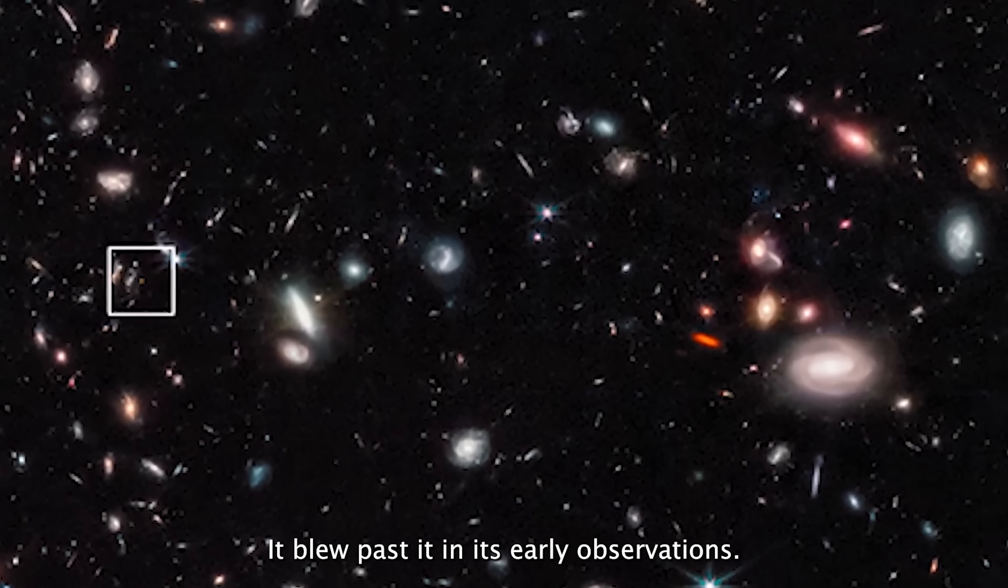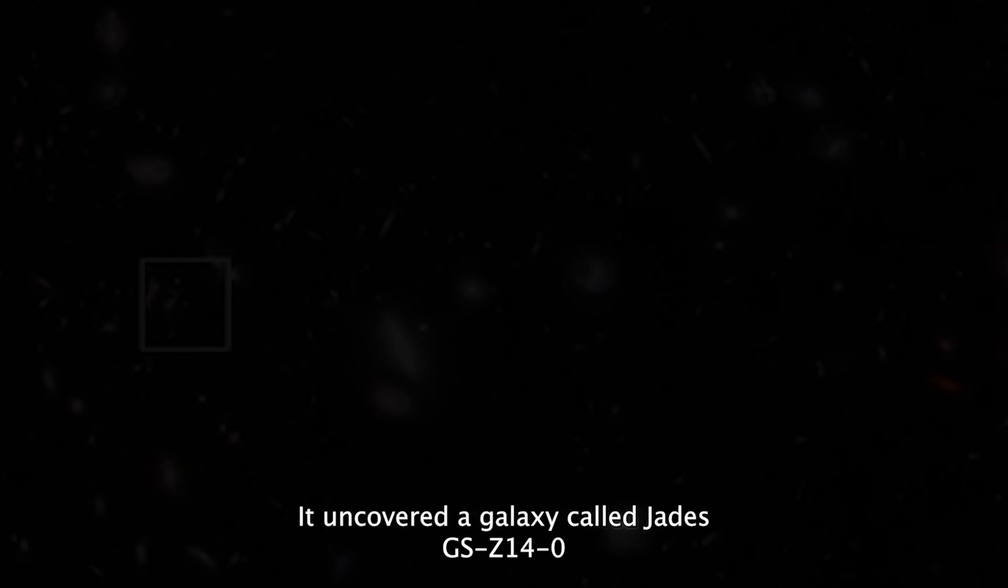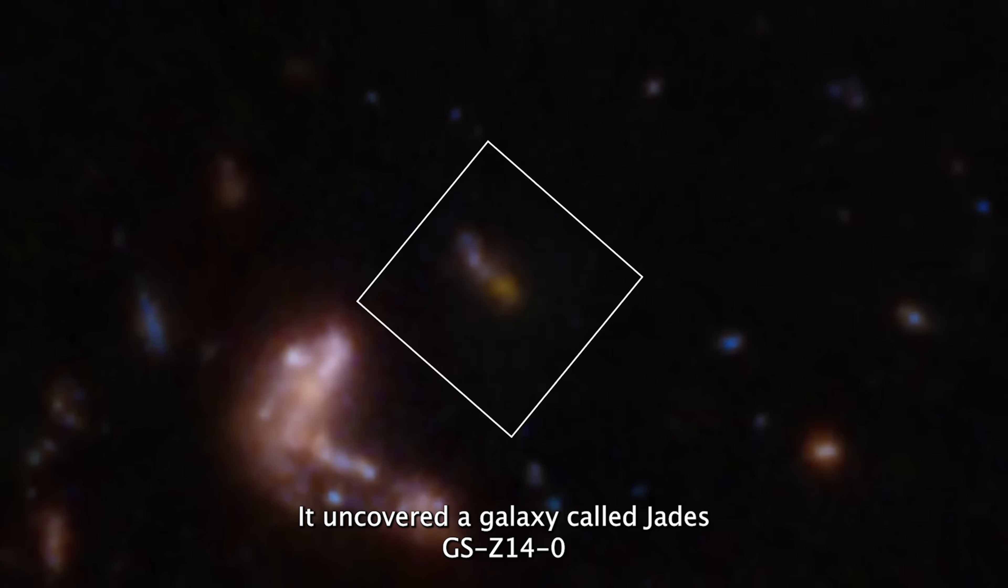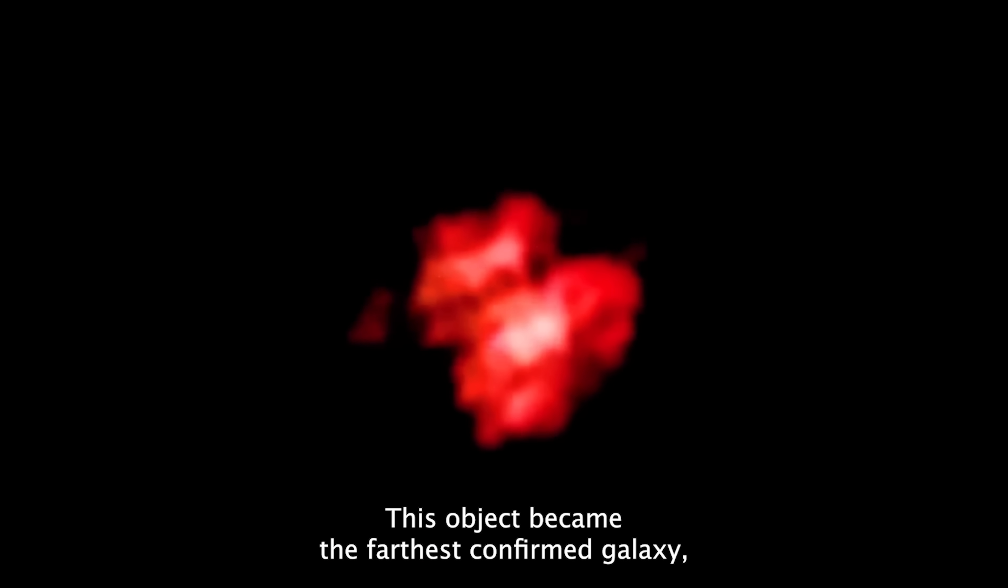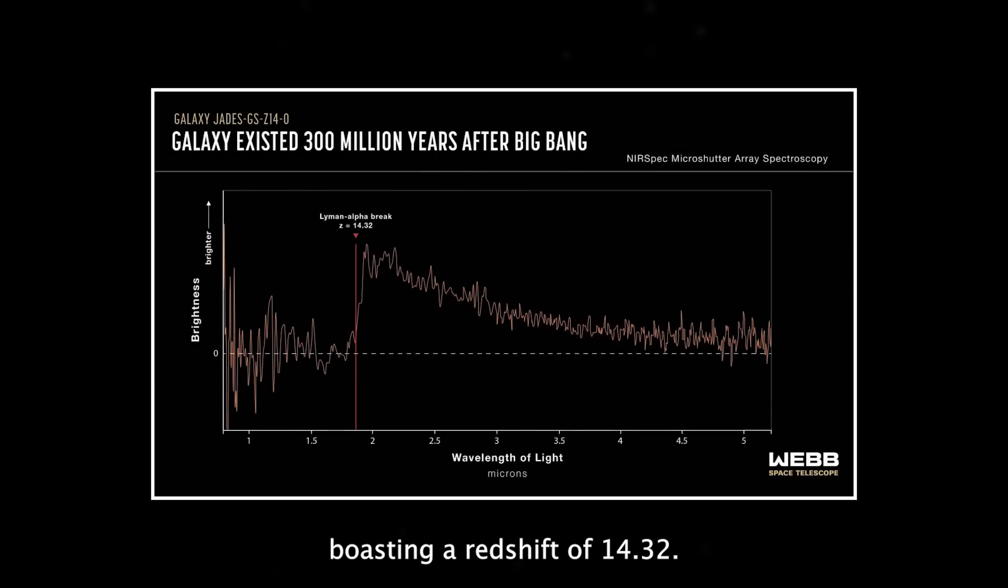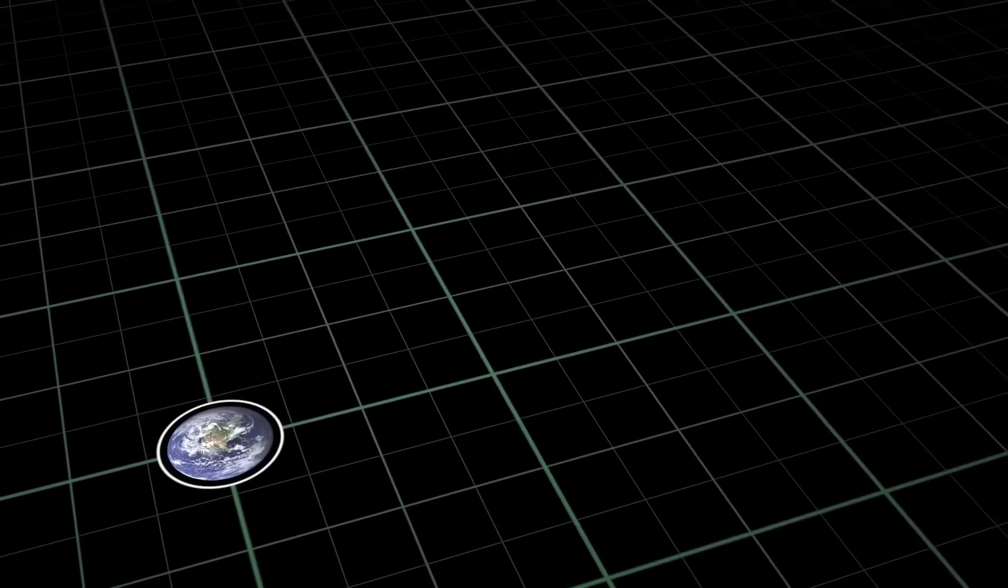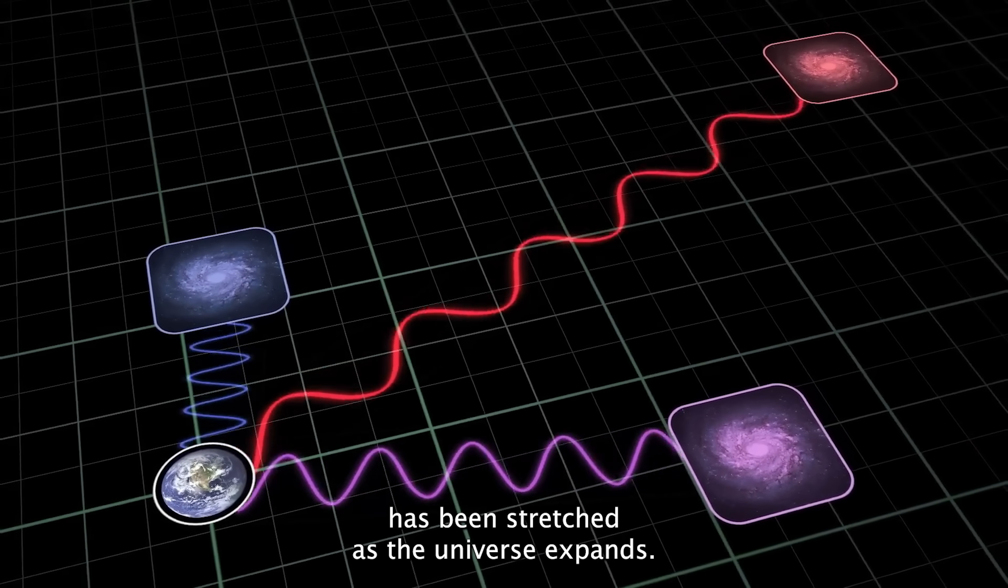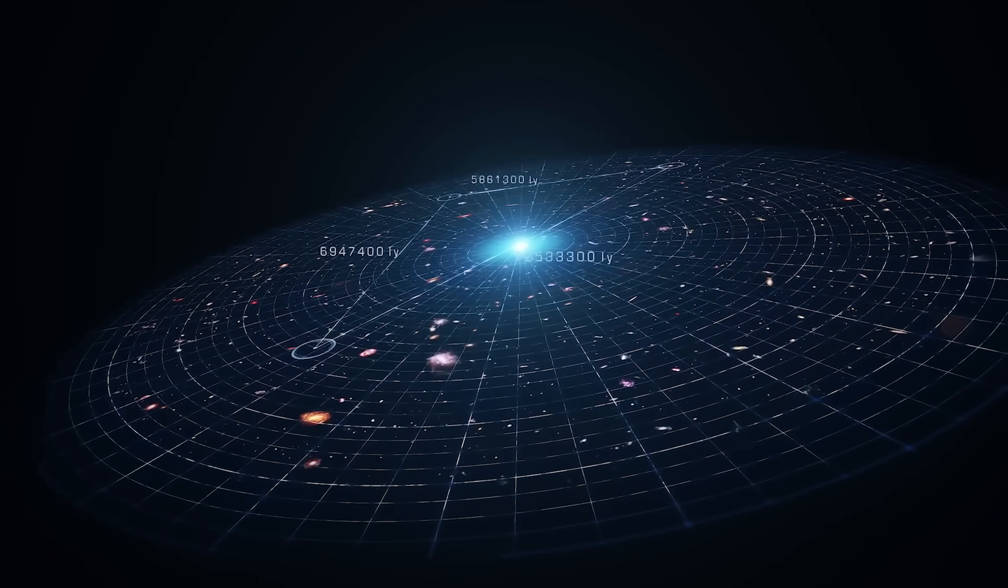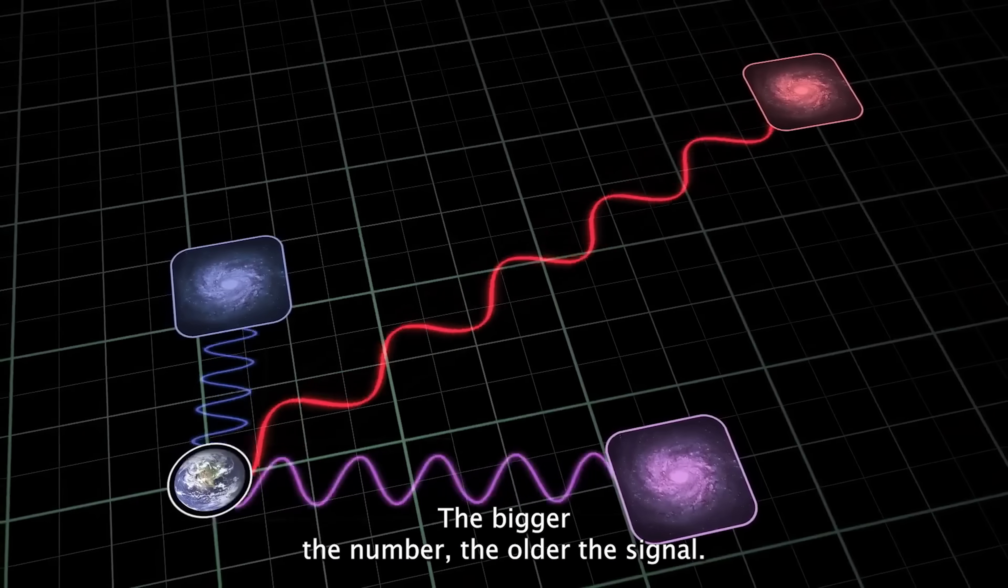In its early observations, it uncovered a galaxy called Jades GSZ 14.0. This object became the farthest confirmed galaxy, boasting a redshift of 14.32. Redshift basically tells us how much a galaxy's light has been stretched as the universe expands. The bigger the number, the older the signal.